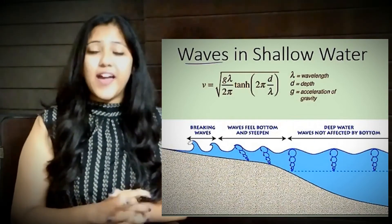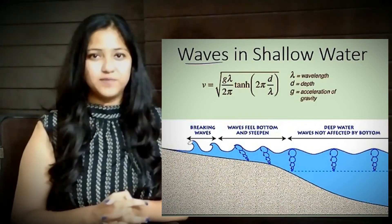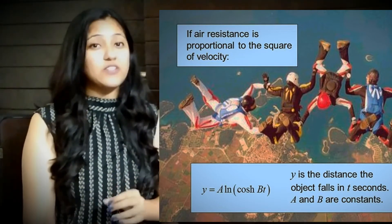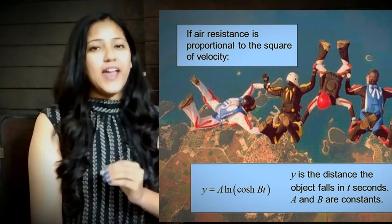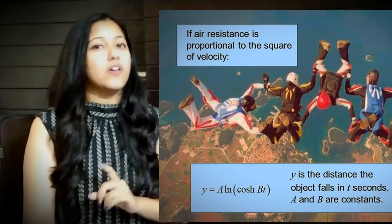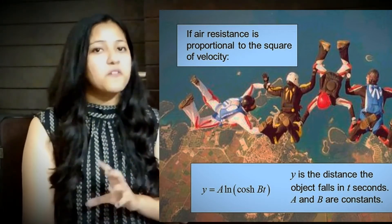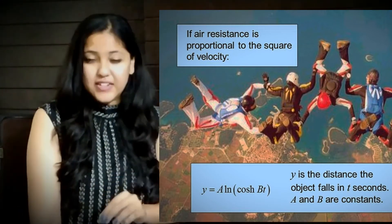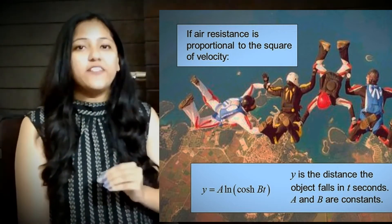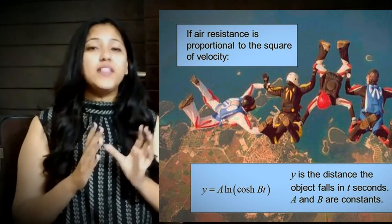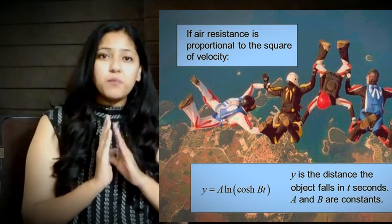The last application of hyperbolic functions is a skydiver. A skydiver always chooses a particular height so as to reach the ground safely in a particular time, and the expression for that height is given by y = a log cosh(bt), where a and b are again arbitrary constants, t is time in seconds, and y is the height from which the object is set to fall. This expression is applicable when the air resistance is directly proportional to the square of the falling object's velocity.